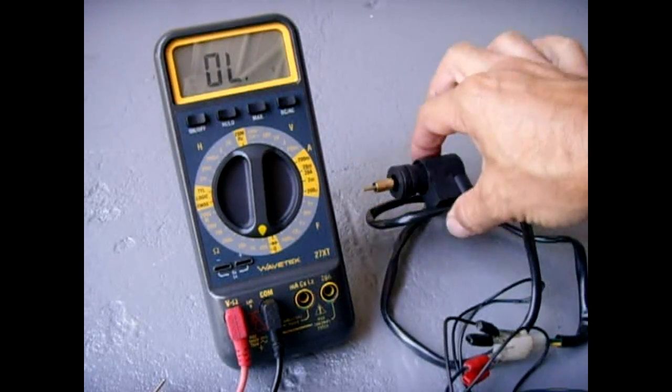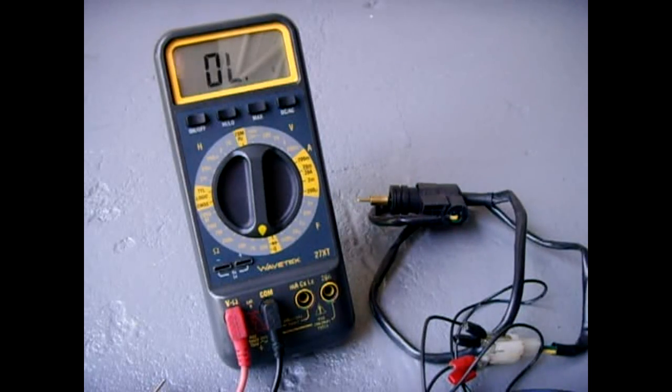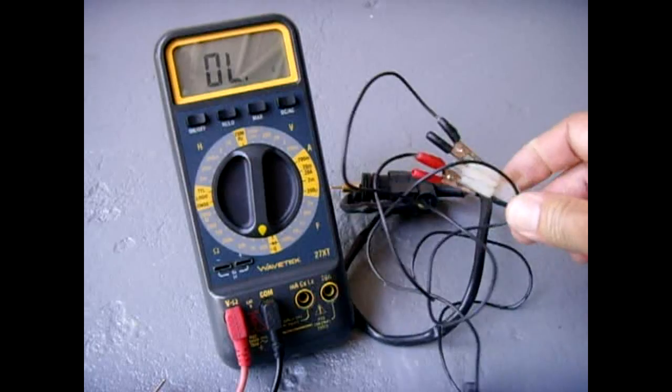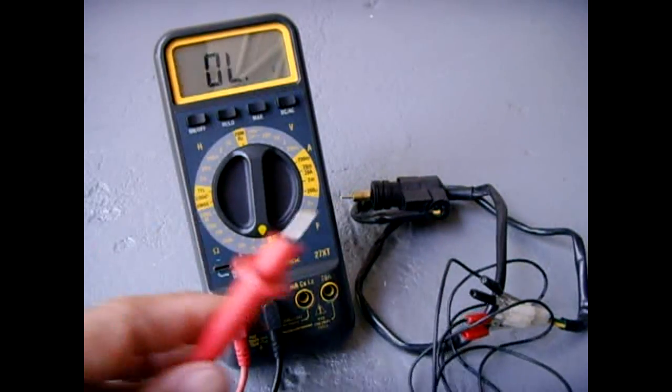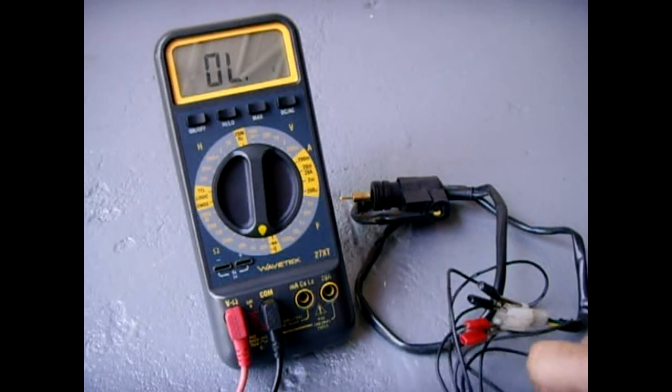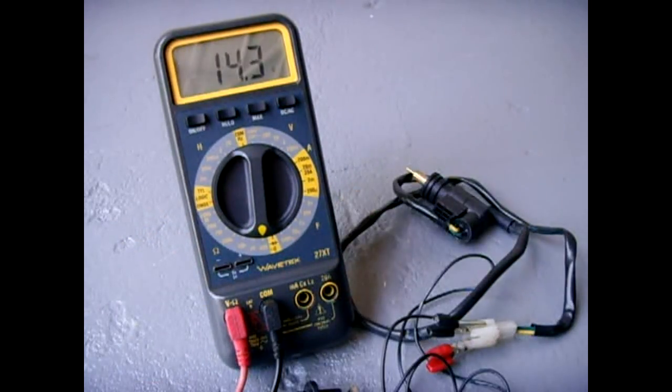We're now going to check the resistance of these two wires leading into the unit. One wire on each terminal inside the connector. One here, and the other one here. As you can see, it tests around 14.3 ohms.